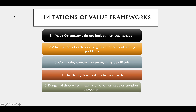On page 84 we look at the limitations of value frameworks — what Kluckhohn and Strodtbeck and Hofstede are not considering when creating these theories. First, they don't consider individuals within the group — everybody is different. Just because you are in a particular cultural group doesn't mean you agree with its assigned orientation, because culture is dynamic and heterogeneous. Everyone within the culture will have a different point of view. Second, the value system of each society is ignored in terms of problem-solving; we can't simply assign values to different societies.